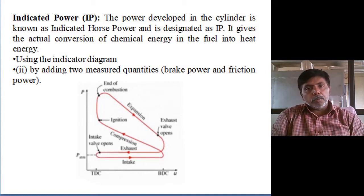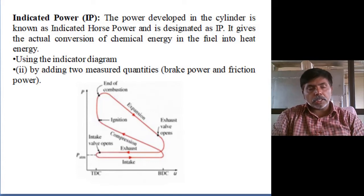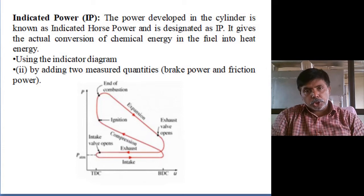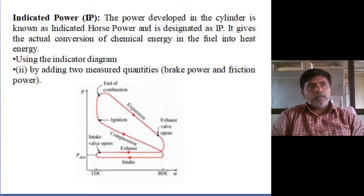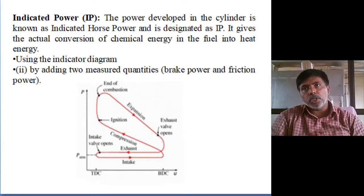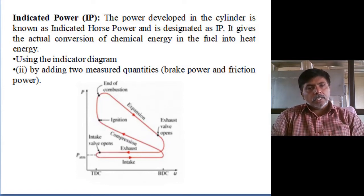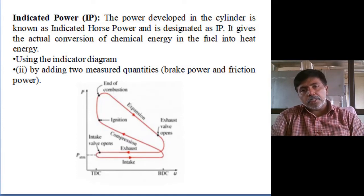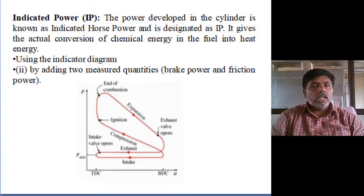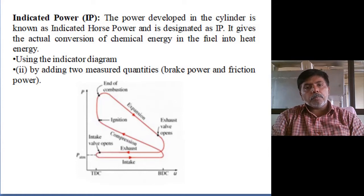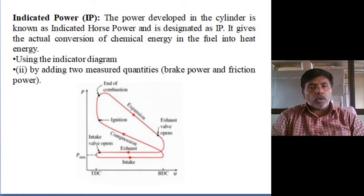First, move to the indicated power — the actual conversion of chemical energy to heat energy. The indicated power means the power developed in the cylinder. In the cylinder, we are converting chemical energy to heat energy. We can calculate that by using the indicated diagram or by adding two measured quantities: brake power and friction power.